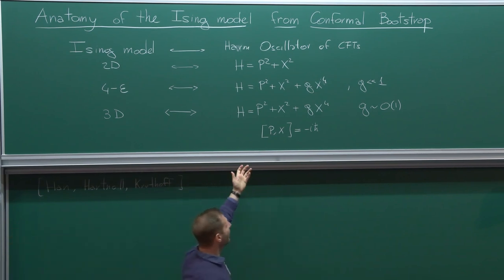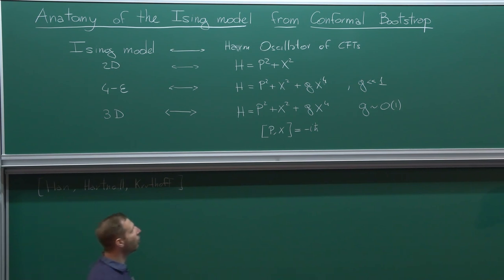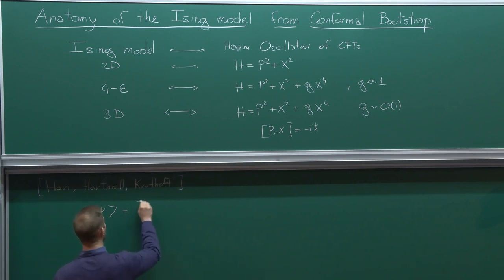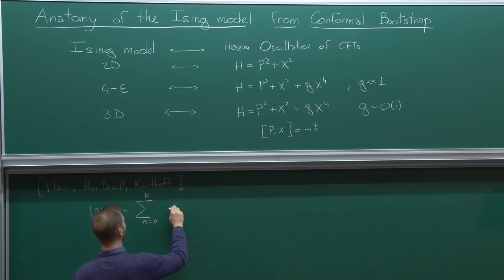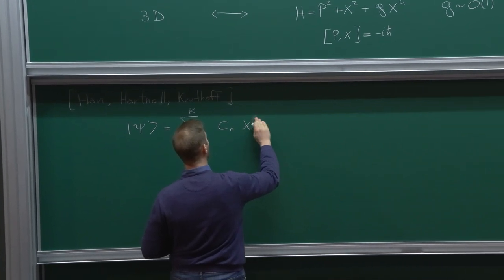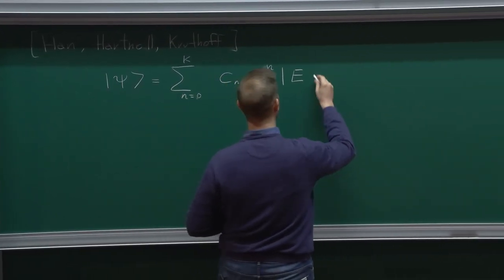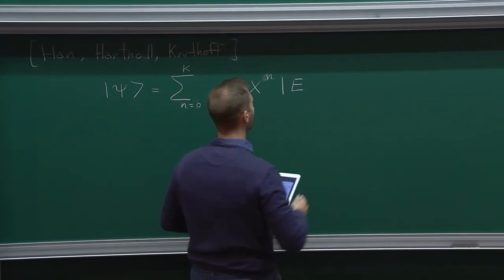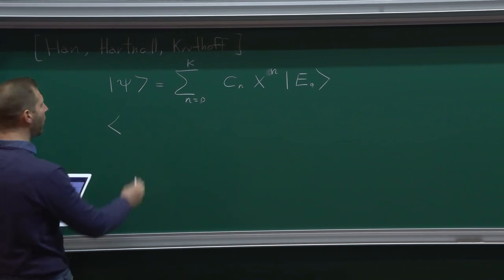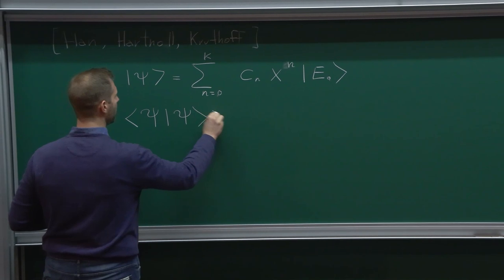Since operators act on a Hilbert space with positive norm, any generic state must have positive norm. We can construct a generic state as a sum from n equals zero to capital K of coefficients C_n times the operator X to the power n acting on the ground state. We require this state to have non-negative norm.